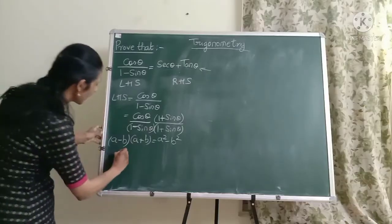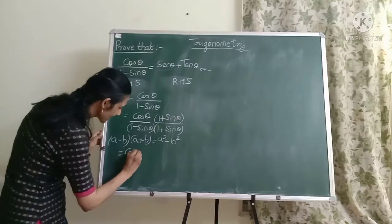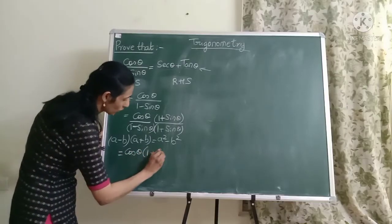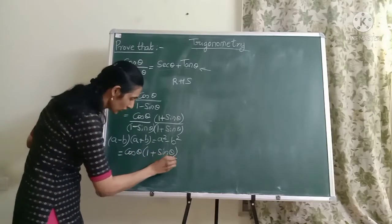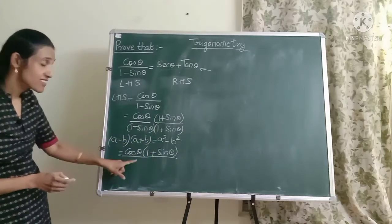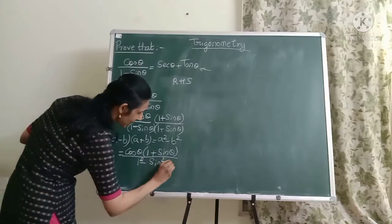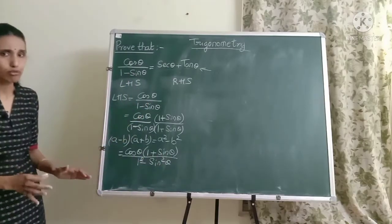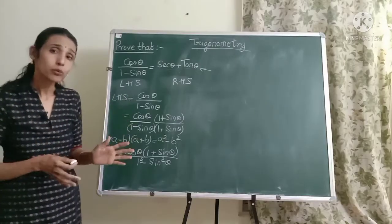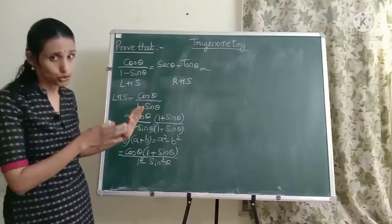Okay now unnecessarily friends don't open up the brackets in the numerator. So just keep it as it is. Cos theta into 1 plus sin theta. Keep it like that only. Here you are going to apply this formula. So what is it going to be in the denominator? Can you tell me? Yes. 1 square minus sin square theta. Just apply the formula and friends because it's a theory question make sure that you write each and every formula that you have used.